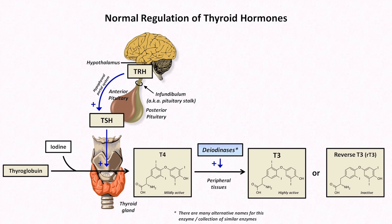Both active T3 and reverse T3 only differ in which of the four iodine atoms were removed by the enzyme. Normally, there is about a 1-to-1 ratio of T3 to reverse T3 that is produced. However, pregnancy, fasting, hepatic and renal failure, and beta blockers all result in preferential conversion to reverse T3, thus decreasing the amount of active hormone.